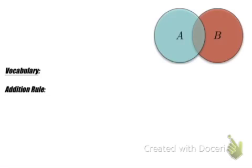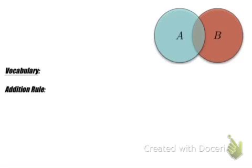Hey guys, in this video we're going to talk about the addition rule, where we're going to calculate the probability of any overlapping events. In probability, if we were to calculate the probability of event A occurring or event B occurring, there's a possible overlap that A and B will also occur. So if we just want A or B to occur, we also have to take into consideration the overlap where A and B both occur in whatever event you're trying to measure.